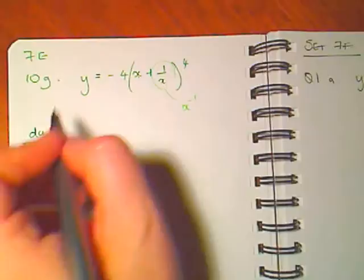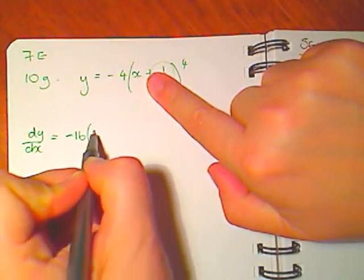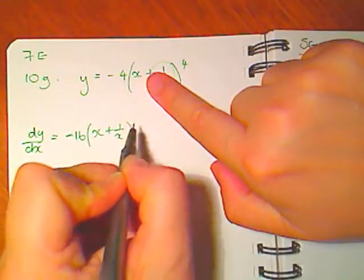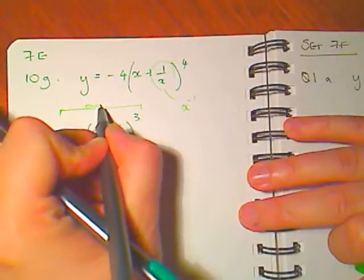It's the derivative of the outside, so I've got 4 times minus 4 is minus 16. Write what I've got, 1 off the power. That's the derivative of the outside, that's this bit, that's the outside.